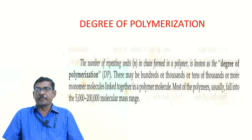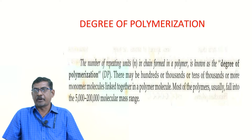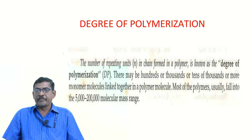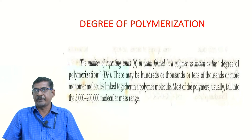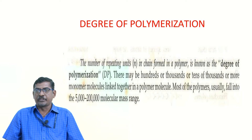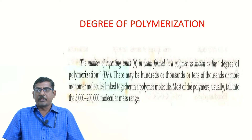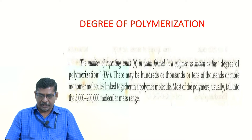Next is the degree of polymerization. The number of repeating units present in the polymer chain is called the degree of polymerization. The value of n may be hundred, thousand, tens of thousands, or more monomer molecules linked together in a polymer molecule. Most polymers have a molecular mass in the range of five thousand to two lakh.